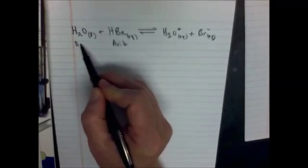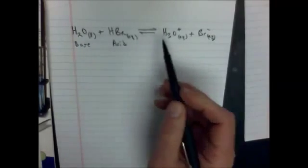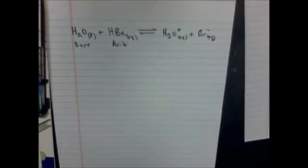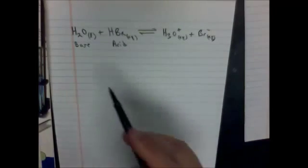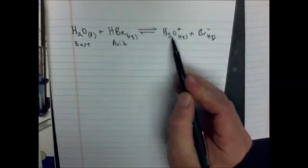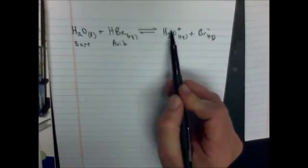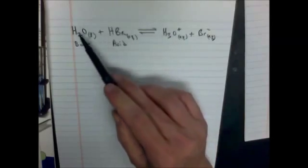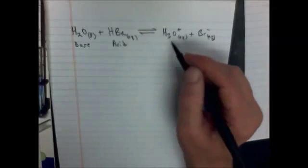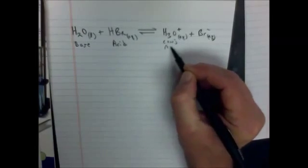Conversely, this one must be the base, because it's going to gain a proton as it goes from this side to this side. Once again, a proton being an H+. Now we need to find the conjugate acid. Well look, this loses a proton going from the right hand side to the left hand side. So therefore, this must be an acid, and since it's on the right hand side, we'll call it the conjugate acid.